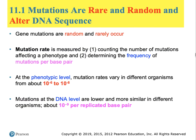The first thing about mutations is that they always involve DNA. The second thing about mutations is that they're very rare. Nature has to balance the rate of mutation with the rate of evolution. And the last thing is they are random. Mutation rates are an important indicator of the level of DNA change.